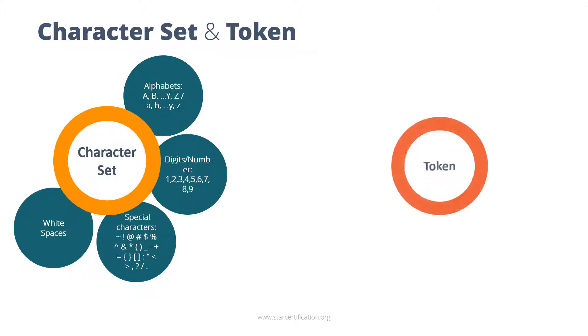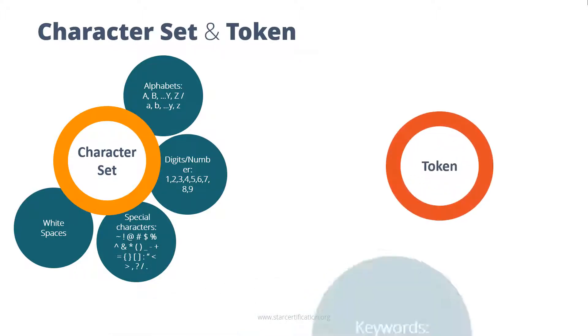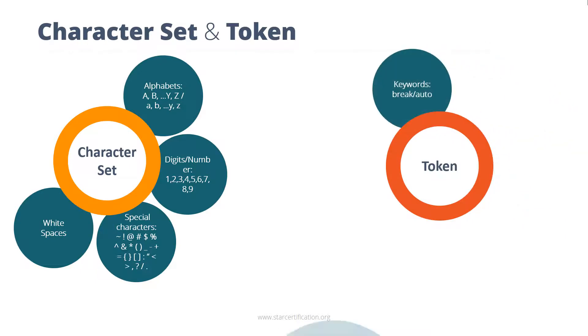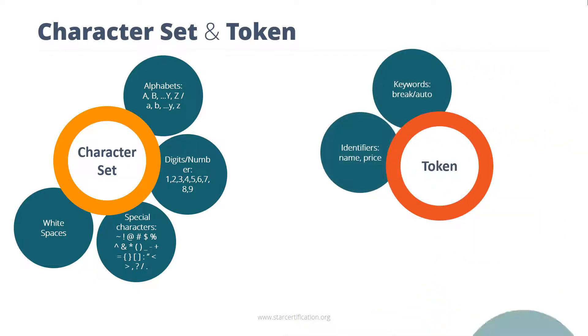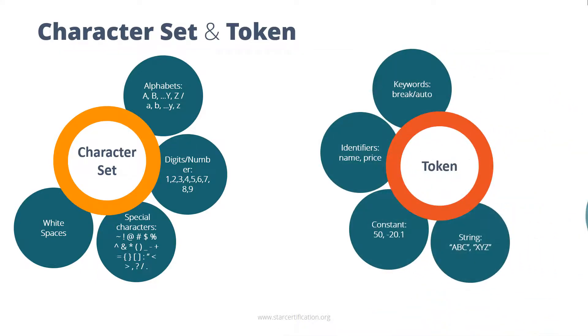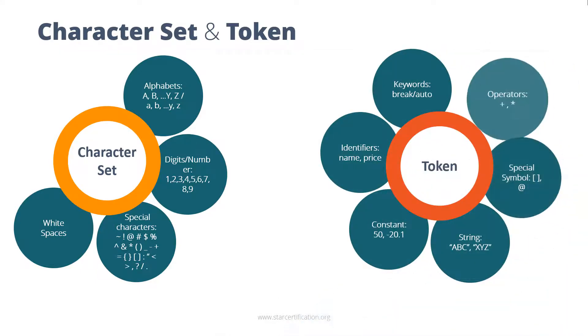A token represents individual words, numbers or punctuation marks. The C programming language has six tokens that are displayed on the screen.